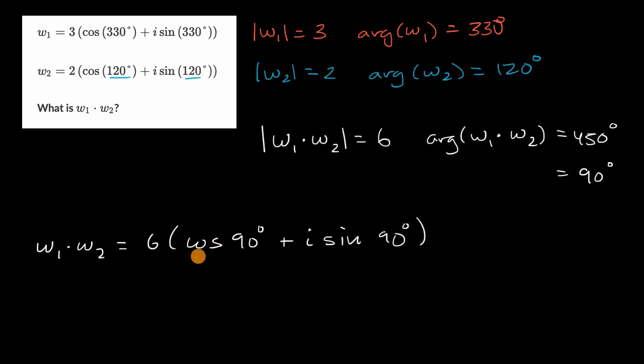Now we know what the cosine and sine of 90 degrees is. Cosine of 90 degrees is equal to zero, and sine of 90 degrees is equal to one. So all of this simplifies quite nicely. All you're left with is a six times I. So this is equal to six I. And we are done.